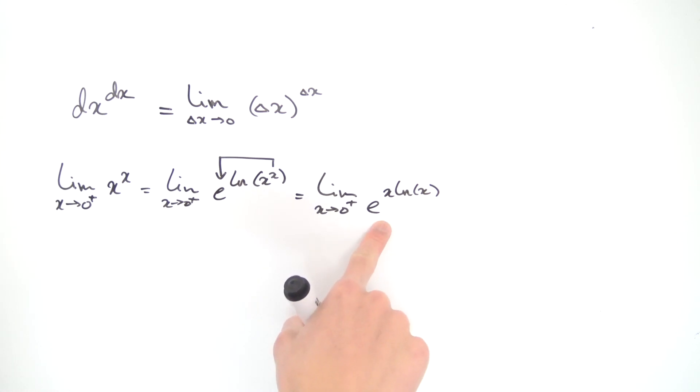Now since the exponential function is continuous, we can bring the limit into the exponent, and this becomes e to the limit as x approaches zero plus of x times natural log of x. Now this guy over here, we can actually employ some L'Hopital's rule. It might not be in the form infinity over infinity or zero divided by zero. It is in the form though, zero times infinity.